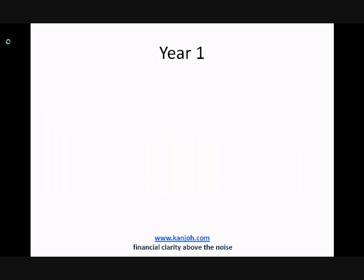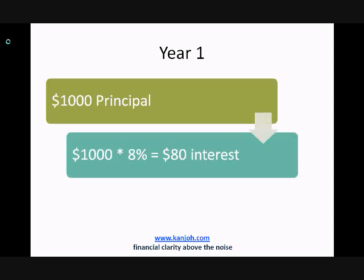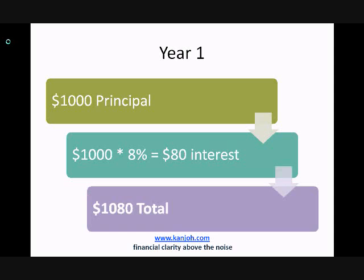Let's see what happens in year one. We have $1,000 principal to start, and we get 8% on that. So that's 1,000 times 8%, which is $80 in interest. You add these two numbers together, and you get a total of $1,080 at the end of year one. So this is pretty straightforward — so far, so good.